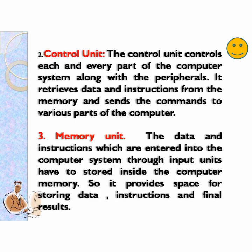The next one is CU, that is the control unit. The control unit controls each and every part of the computer system along with the peripherals. It retrieves data and instructions from the memory and sends commands to various parts of the computer. Peripherals — as I told you in the last class — are all the devices which are attached to the computer.